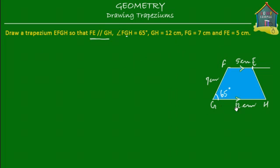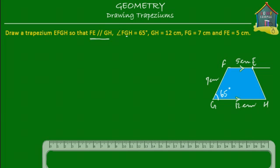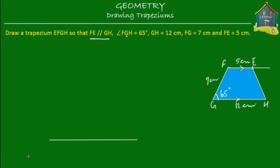Now let's make this trapezium using the specifications given. First, we'll make the line GH which is 12 centimeters long. We take a ruler and make a line that's 12 centimeters from here to here. Let's call this GH — 12 centimeters.